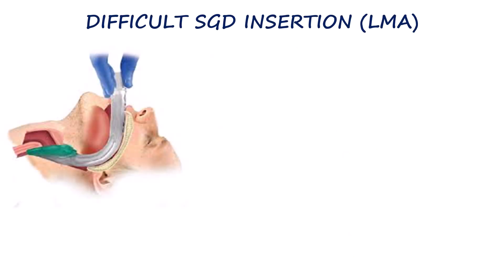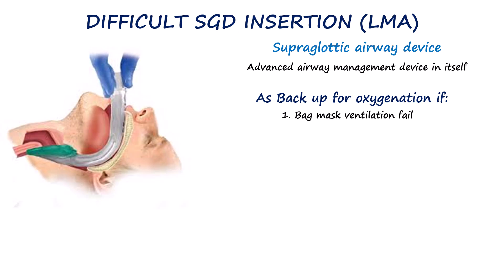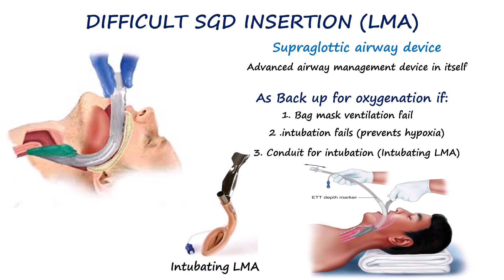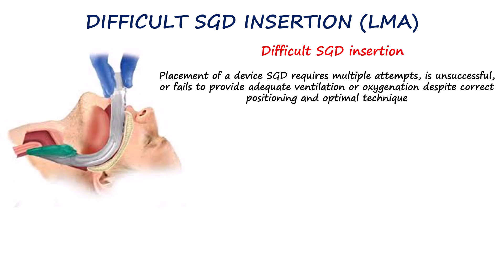Supraglottic airways are another device widely used in anesthesia as a means to secure the airway. In the context of a difficult airway, supraglottic airways play a critical role as a backup for oxygenation when mask ventilation is inadequate, and can also serve as a conduit for tracheal intubation when direct laryngoscopy or initial intubation attempts fail. Difficult supraglottic airway insertion is generally defined as a situation in which placement of a device such as a laryngeal mask airway requires multiple attempts, is unsuccessful, or fails to provide adequate ventilation or oxygenation despite correct positioning and optimal technique.